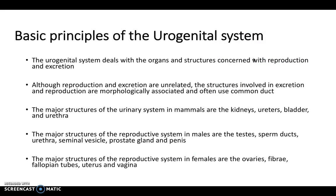In terms of basic principles, the urogenital system deals with the organs and structures concerned with reproduction and excretion of urine. Although reproduction and excretion are unrelated functions, the structures involved are morphologically associated and often use a common duct — which comes back to embryology, which we'll look at in a moment.